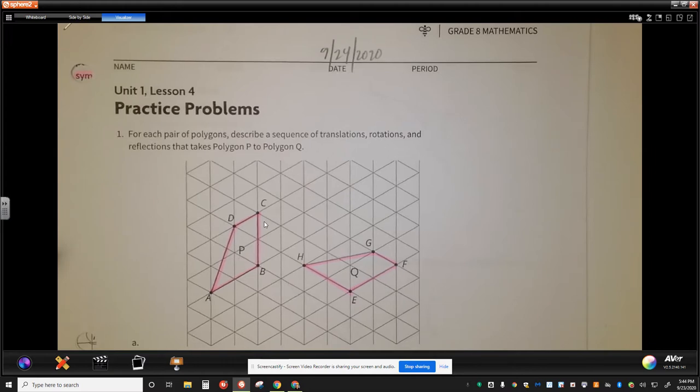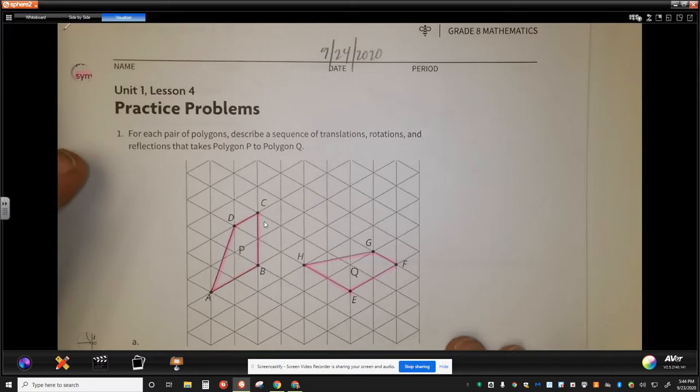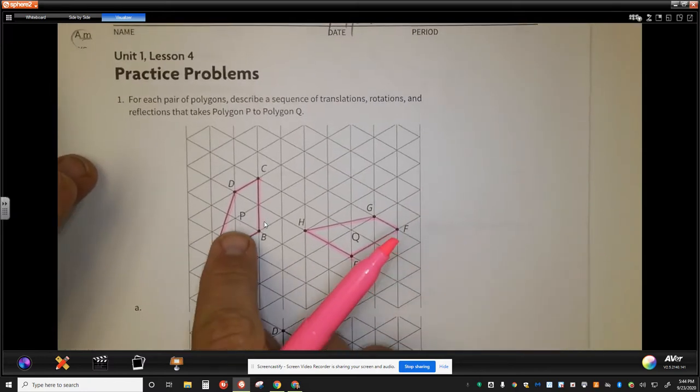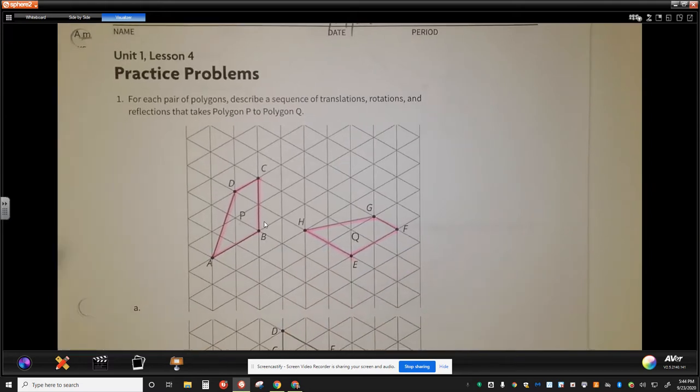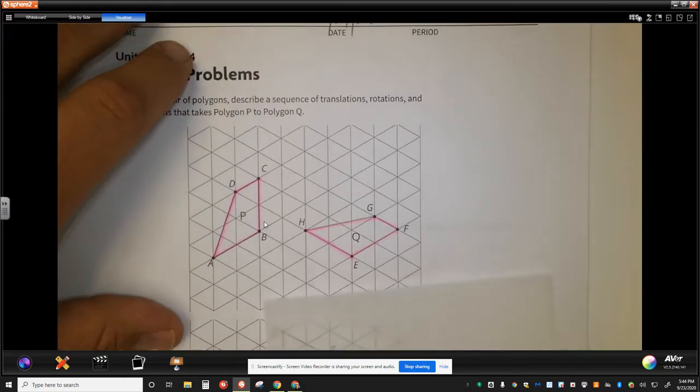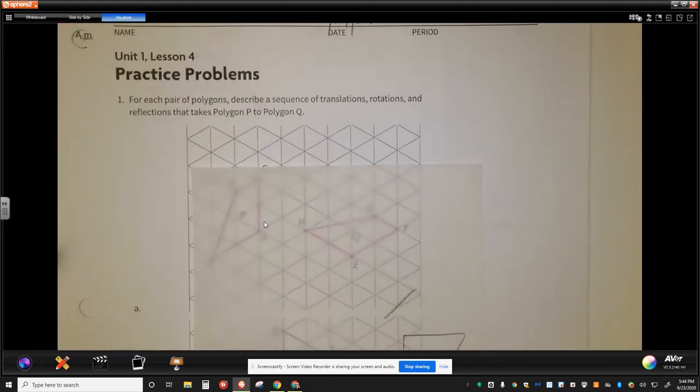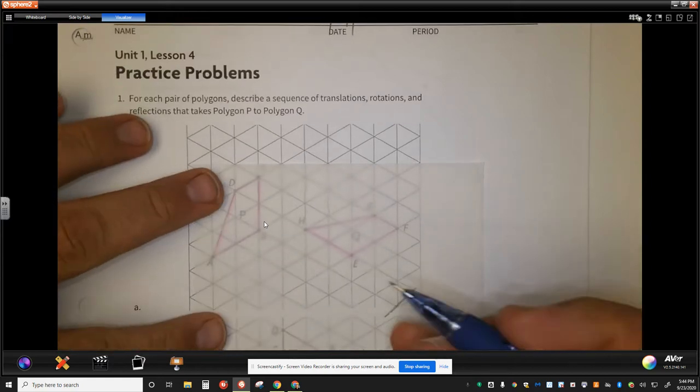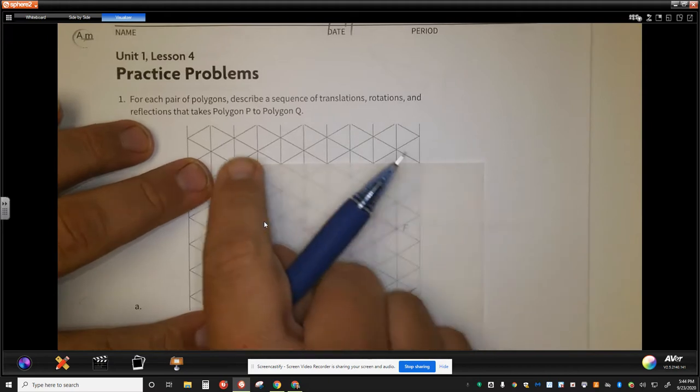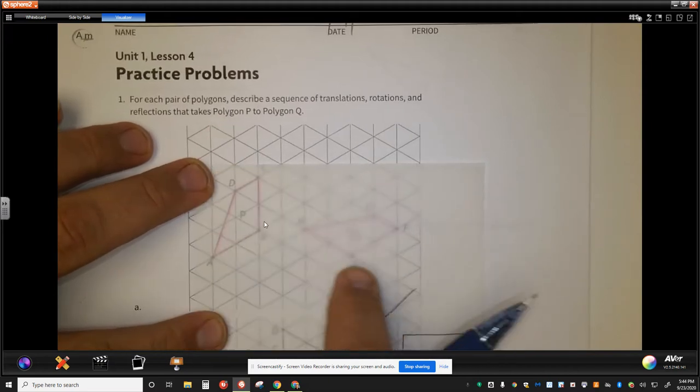What we're after with this one is you need to explain the transformation that is taking place that will move figure P to figure Q. Like I showed in the video earlier with the lesson, I think it would be helpful to have a piece of tracing paper to help you identify the different kinds of transformations that you will need to use to take quadrilateral P, or in this case polygon P, to polygon Q.